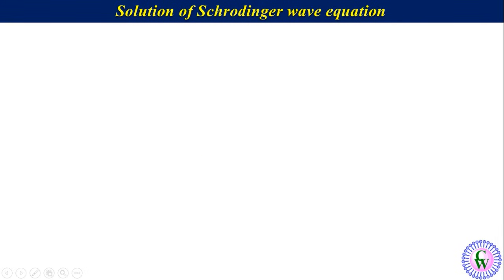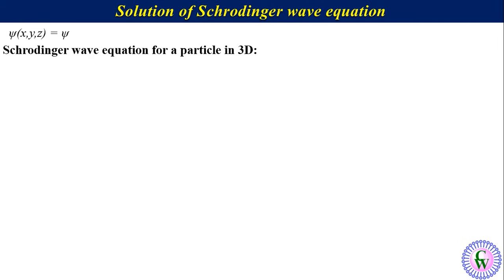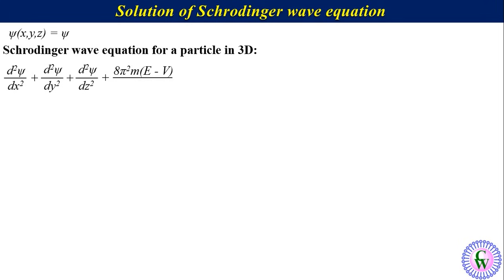Solution of Schrödinger wave equation for a particle in a 3D box. For the sake of simplicity, let's write psi(x,y,z) as psi. The Schrödinger wave equation for a particle moving in 3D can be written as: d²psi/dx² plus d²psi/dy² plus d²psi/dz² plus (8π²m(E − V)/h²) times psi equals zero. Label it as equation number one.